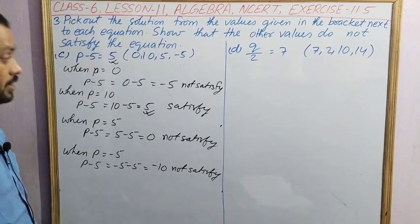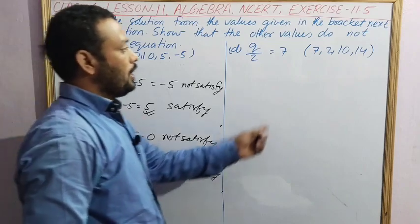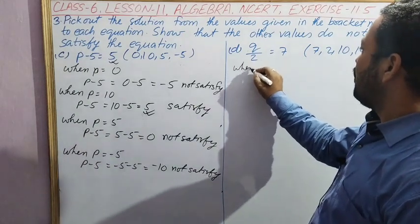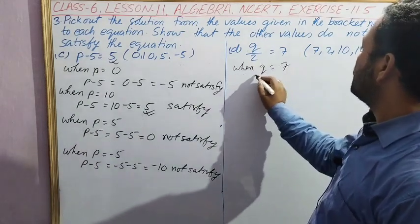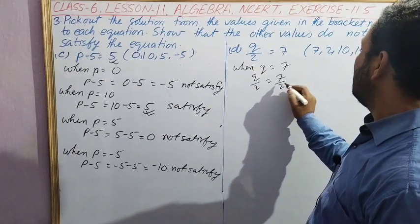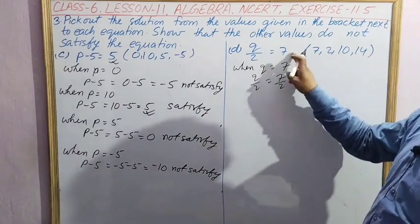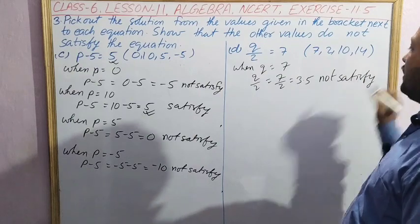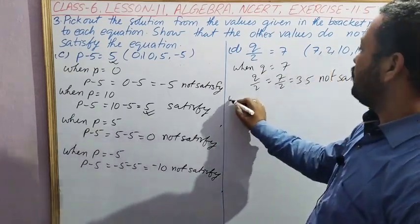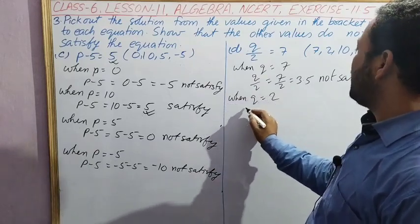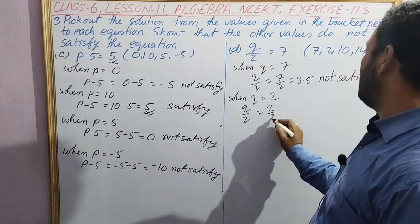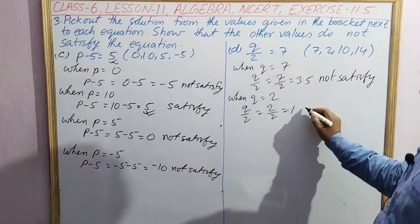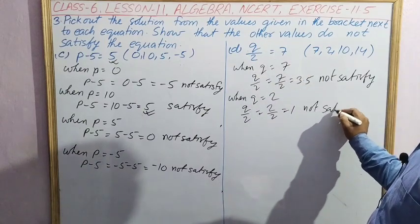Question D: equation is q by 2 equal to 7. Values are 7, 2, 10 and 14. When q equal to 7, q by 2, that is 7 by 2, if you divide it, is 3.5. Here it is 7, so this one is not satisfying. Not satisfy. When q equal to 2, q by 2, that is 2 by 2 equal to 1. Right hand side is 7, so this one is also not satisfying. Not satisfy.